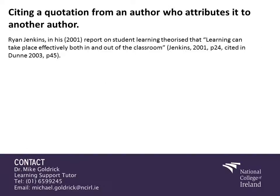Moving on to citing a quotation from an author who attributes it to another author. This quite commonly happens whereby students look through their main core textbook and find a quotation they would like to use. What has happened in this case is that the original author of their book has quoted another academic or another source within their own writing, and students find they want to use that quote but sometimes won't have access to the original material or the other person's work. We have an example here of how to do it.